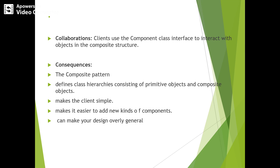The composite pattern has the following consequences. First, it defines class hierarchies consisting of primitive objects and composite objects. Primitive objects can be composed into more complex objects, which can themselves be composed recursively. Wherever client code expects a primitive object, it can also accept a composite object.